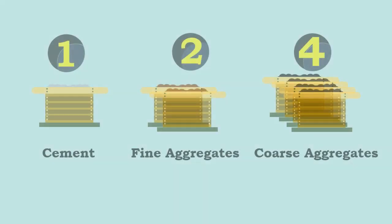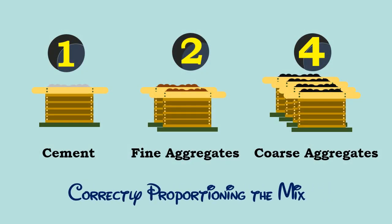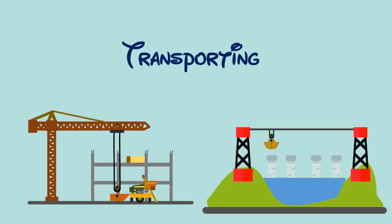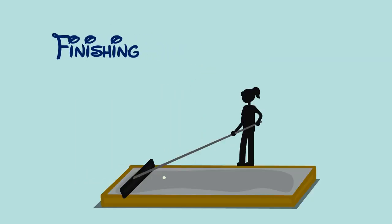Thus, it can be said that the tendency for segregation of concrete can be reduced by correctly proportioning the mix, by proper handling, transporting, placing, compacting and finishing.